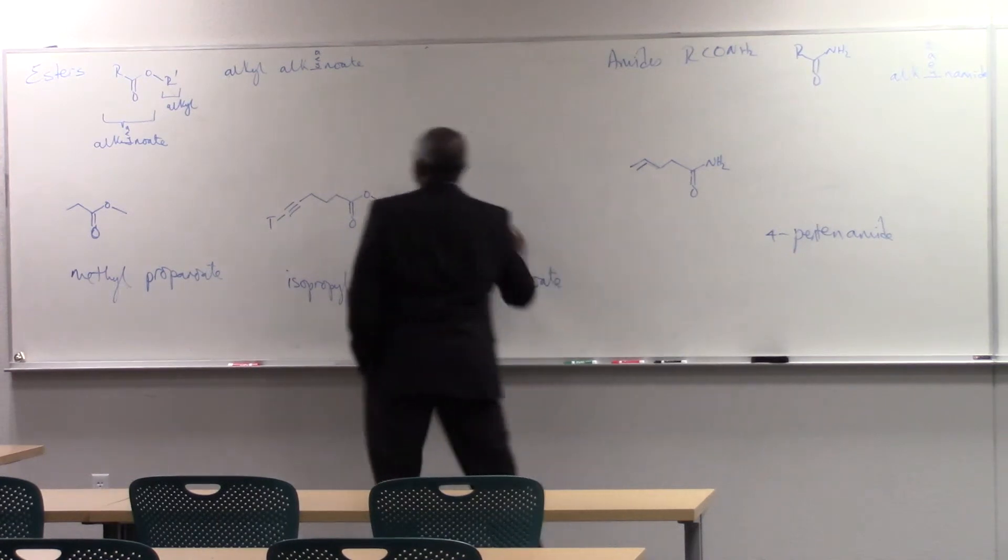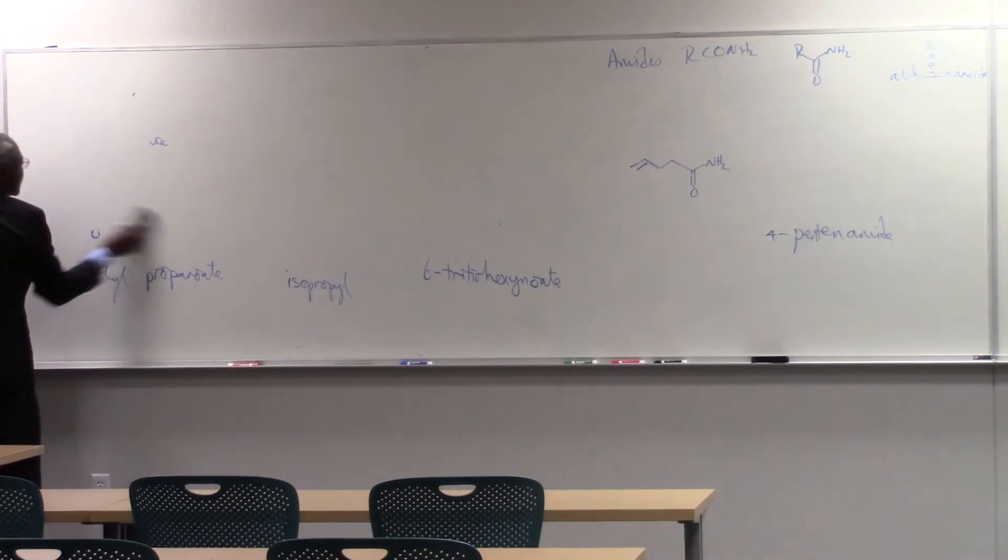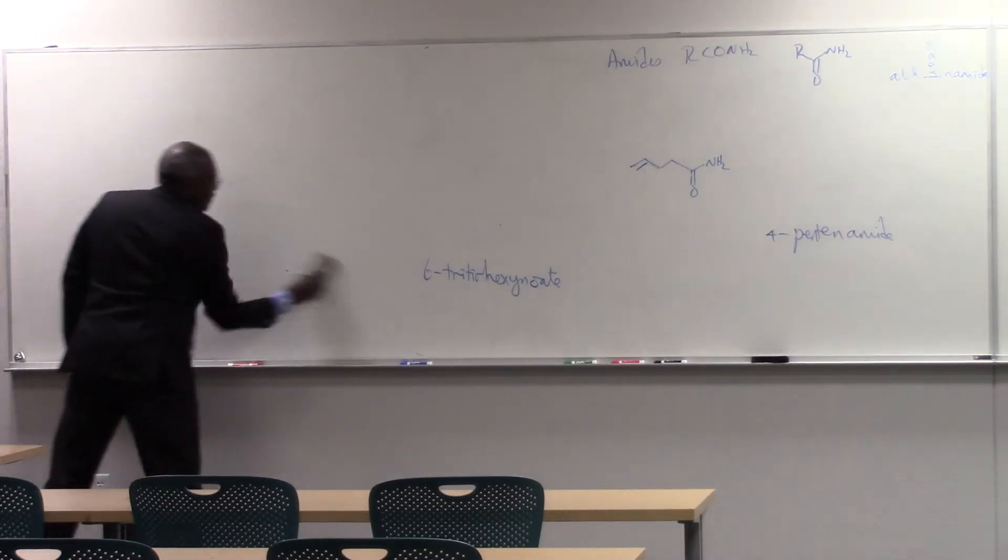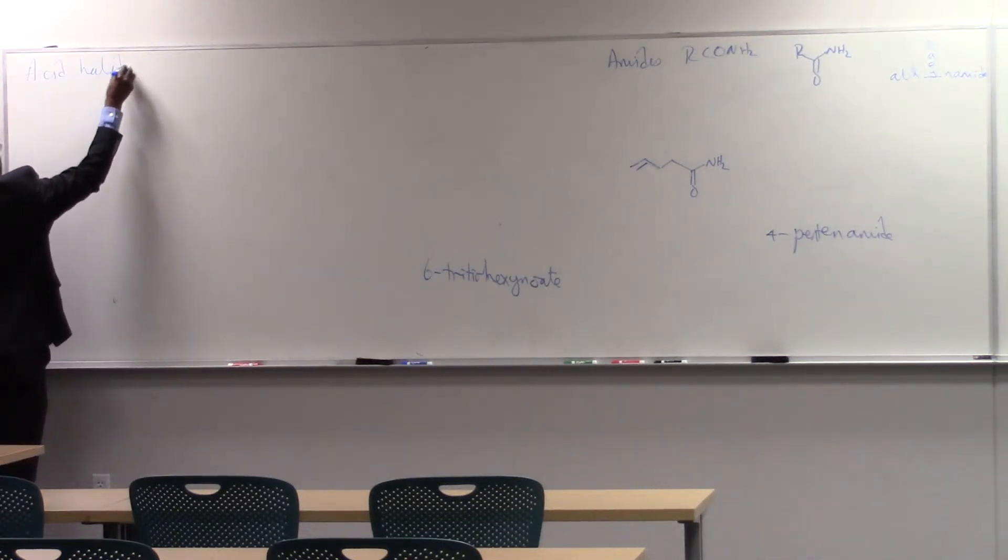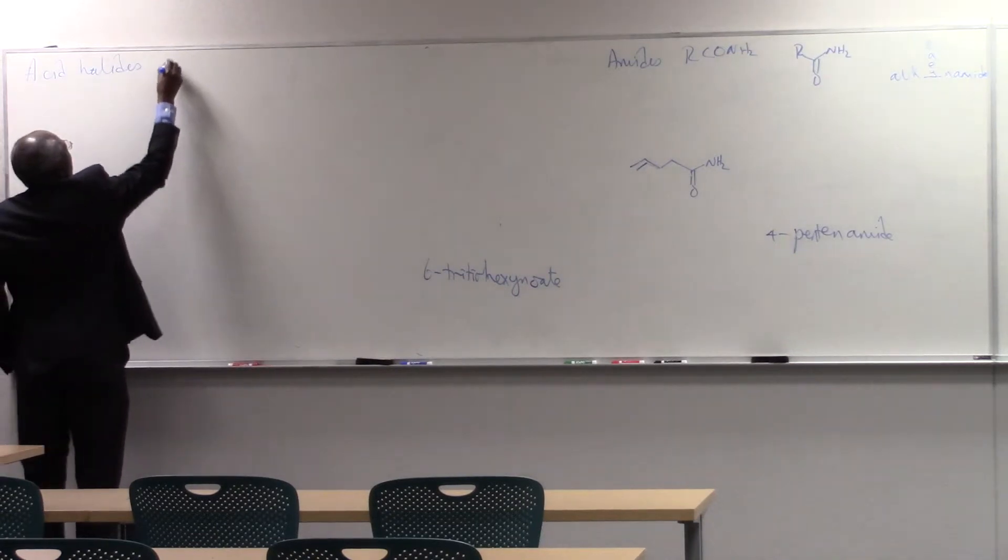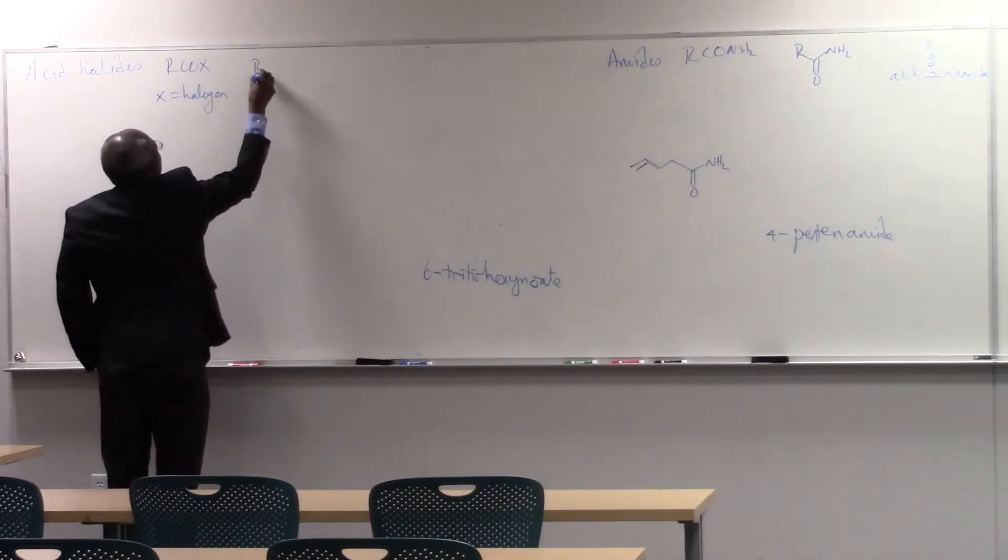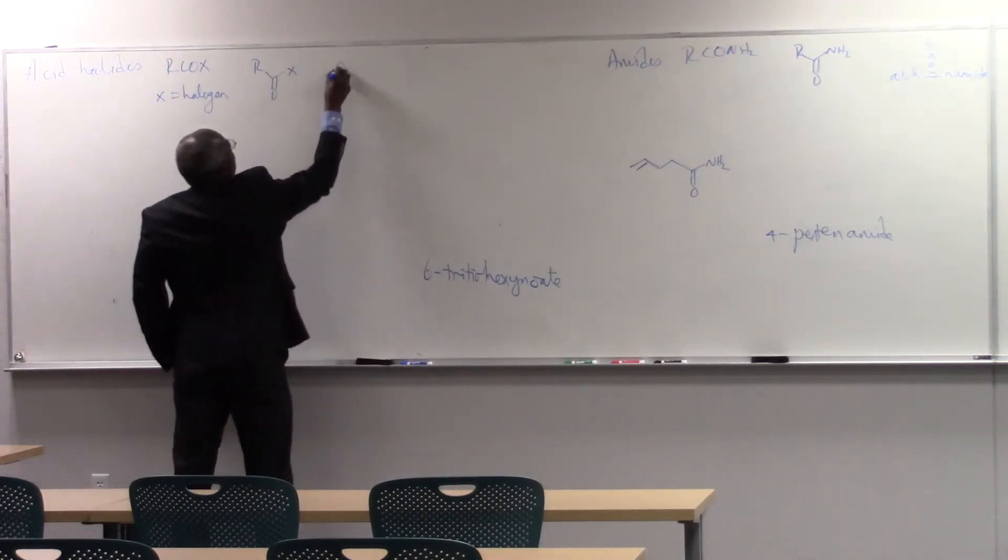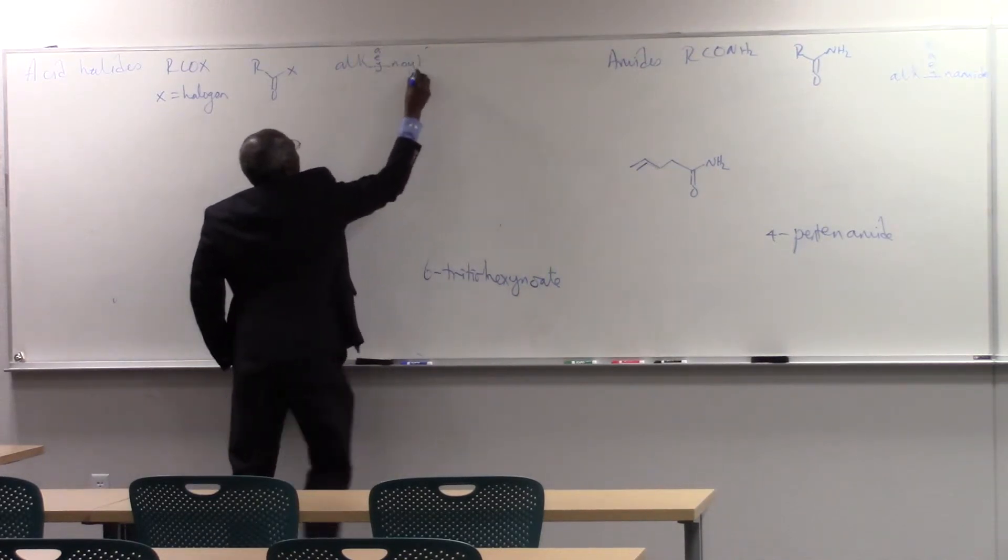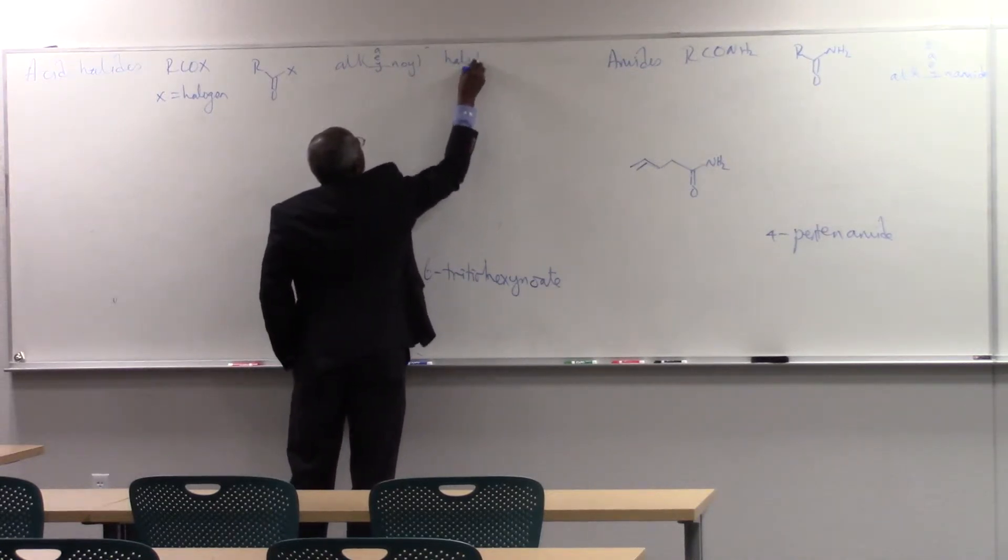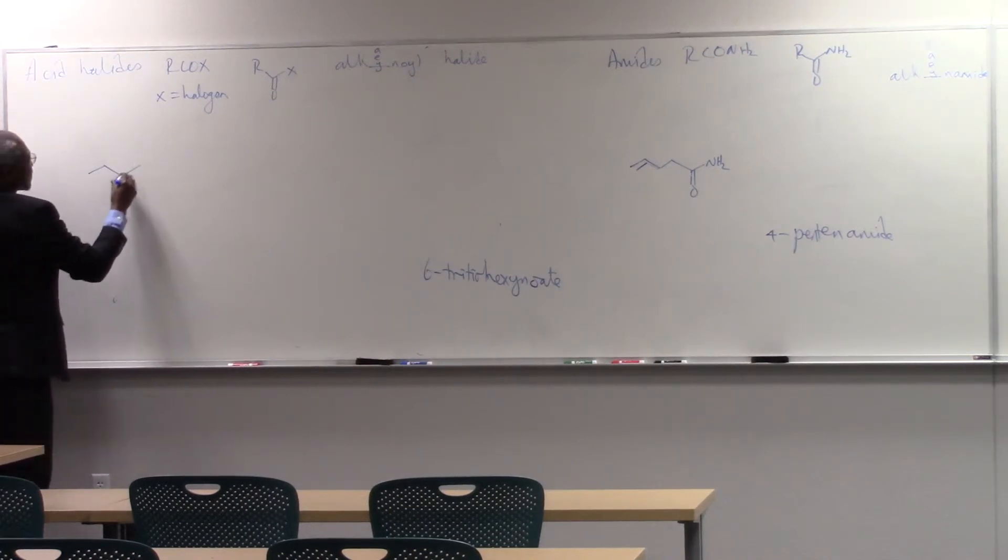And the last one, there are two more. There are acid halides. And so acid halides, which are R-CO-X, where X is a halogen. R-CO-X, and these are called A-E-Y, anoyl halide. All the rules apply. So I'm just going to draw a couple simple examples and move on.